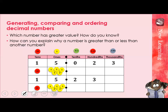Here we have two numbers represented by number counters. Some have been filled in and some we need to think about. The two numbers are 15.023 and 15.23. I want to work out which one has the greater value — which is the bigger number. Have a little think before we move on. Which do you think is bigger — the top one or the bottom one?